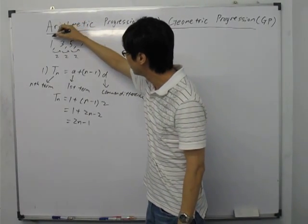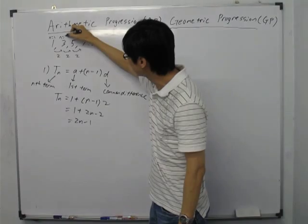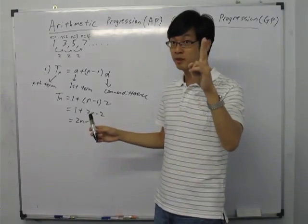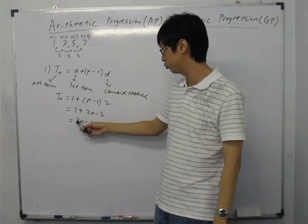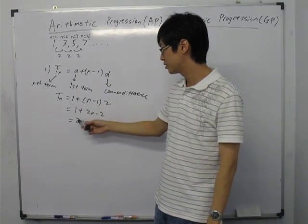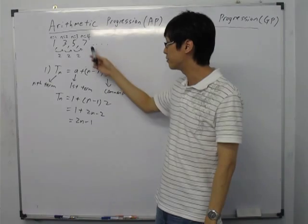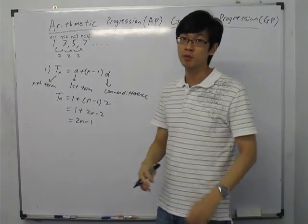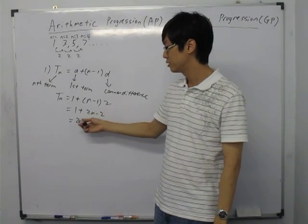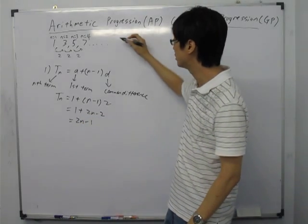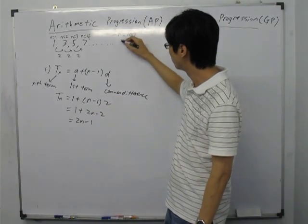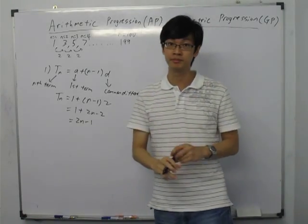So 3 is the second term. If I want to find the fourth term, I sub N equals to 4, so 2 times 4 gives 8, and 8 minus 1 gives 7. So 7 is the fourth term. What if you want to find the 100th term? Very simple — you just sub N equals to 100. You will get 2 times 100, which is 200 minus 1, giving 199. So 199 is the 100th term.